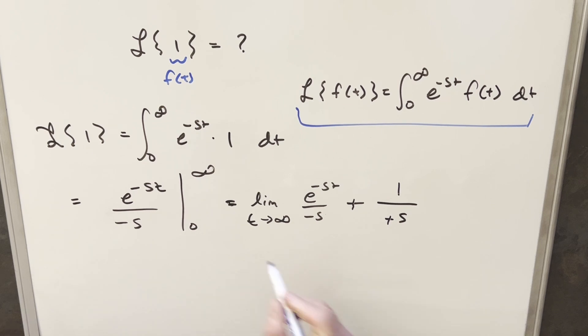And then we just need to deal with this limit over here. But the thing about this is we don't really know what s is. We know that s is some number. We don't know if it's positive or negative. Now, the trouble is, if s is negative here, then we have some positive number times t. And we're evaluating this at infinity. Well, essentially, e to infinity is going off to infinity and this thing diverges.